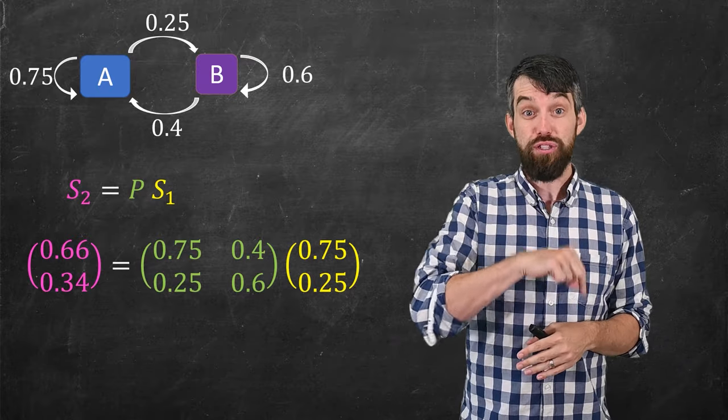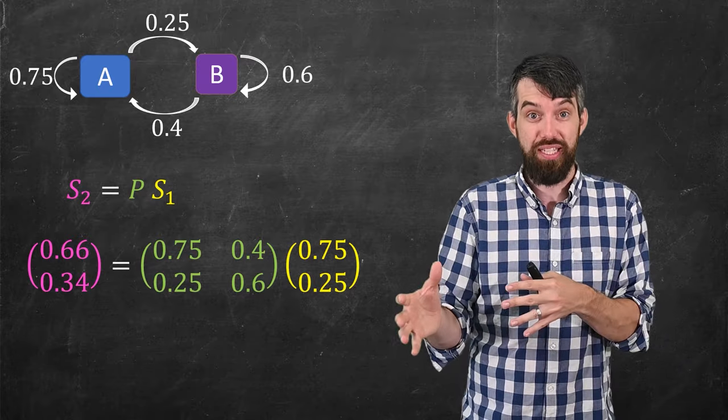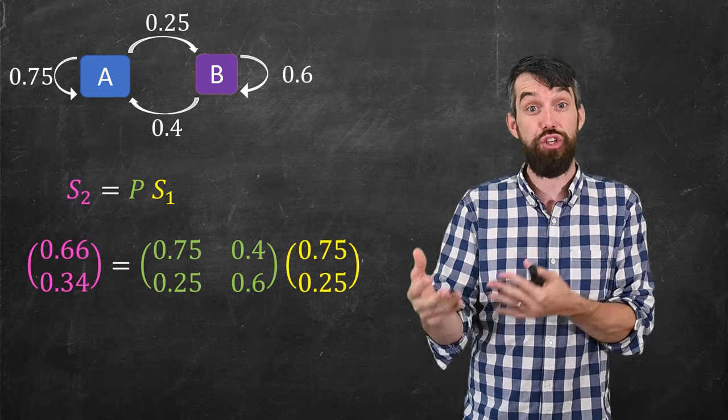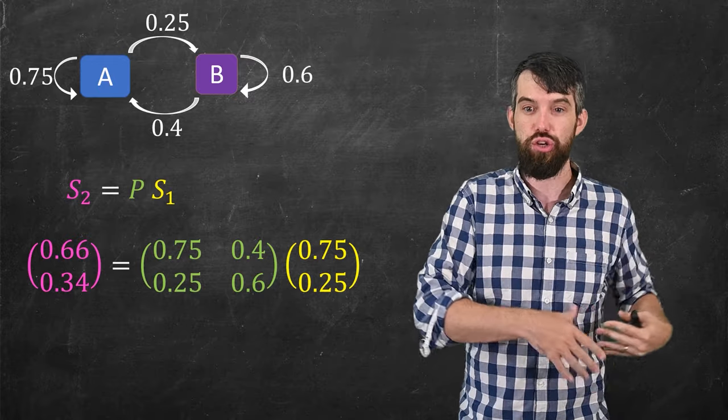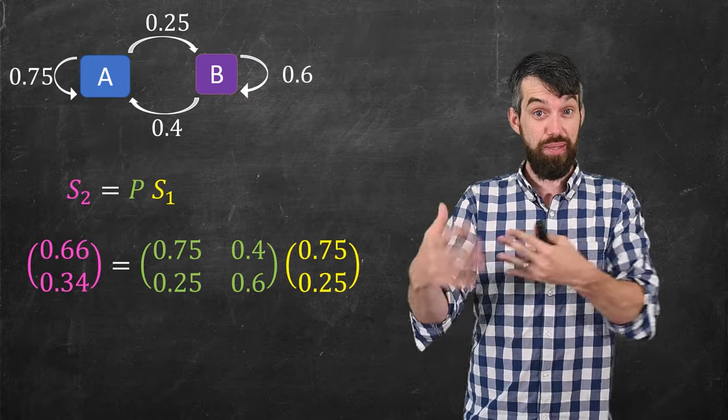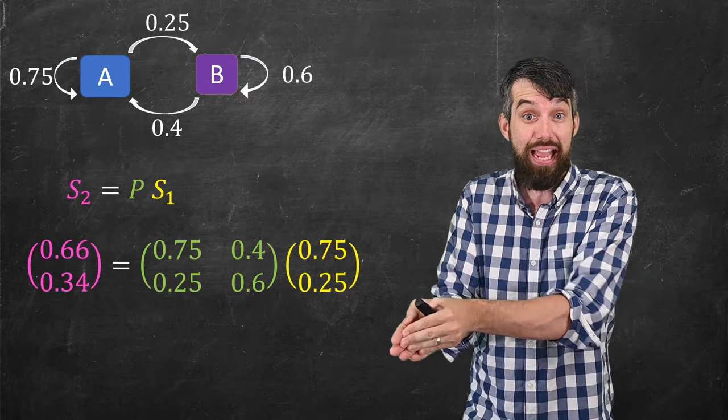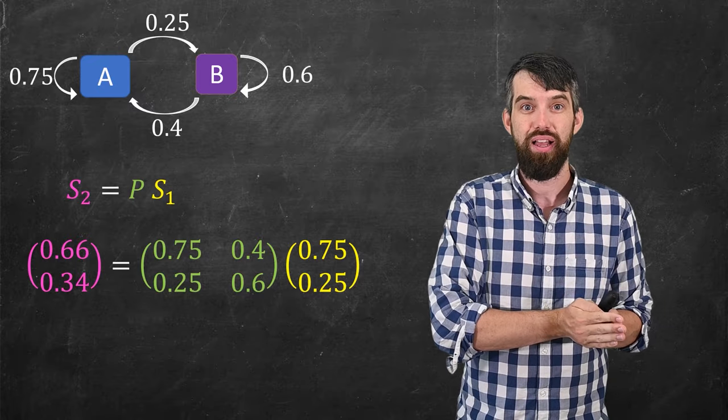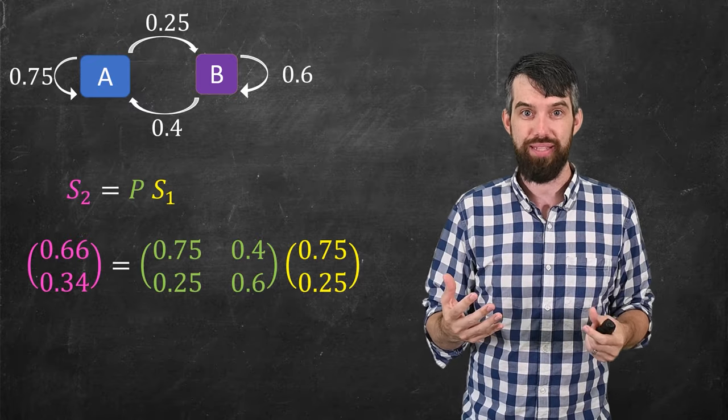Now, I want to note that in the first video on Markov processes, we actually did this computation via a tree diagram and I showed how to justify it. And so right now, I really just want to note that using this matrix method gives us the same answer that we've done in the past, but now it generalizes.